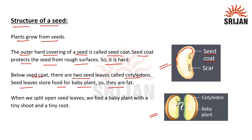Here we can see these structures are called as cotyledon. When we split open the seed leaves we find a baby plant with a tiny shoot and tiny root. This over here is the baby plant.